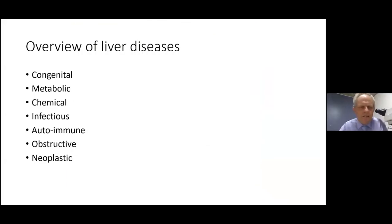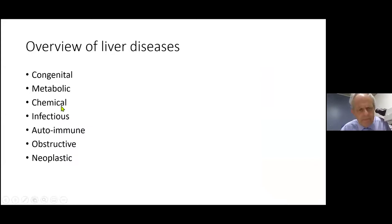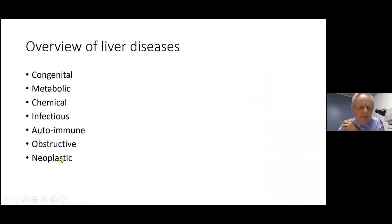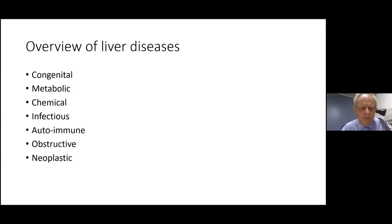An overview of liver diseases: you can divide them into congenital causes, metabolic causes, chemical causes, infections — which can be divided into bacterial and viral illnesses — autoimmune illness, obstructive causes whether arterial, venous, or biliary, and then of course neoplastic disease, whether based on paracellular pathology, hepatocellular pathology, or cells in the sinuses.